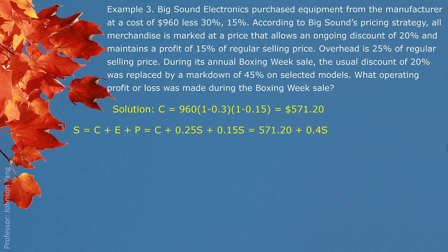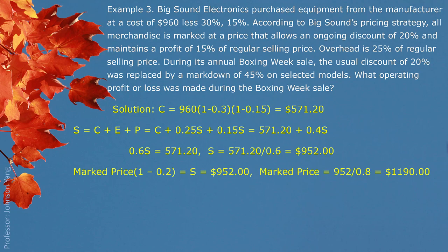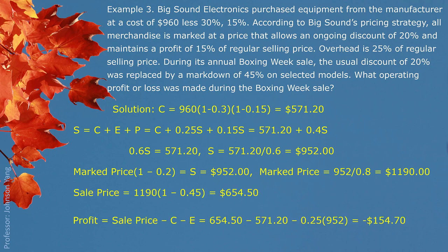Regular selling price S comes from cost of buying plus expenses plus profit. Setting up the equation: cost of buying (net price after trade discounts) = $571.20. Solving the equation gives regular selling price S = $952. Since the 20% discount is based on marked price, marked price × (1 - 0.2) = $952, so marked price = $952 divided by 0.8 = $1,190. With a 45% markdown on marked price, sale price = $1,190 × 0.55 = $654.50.